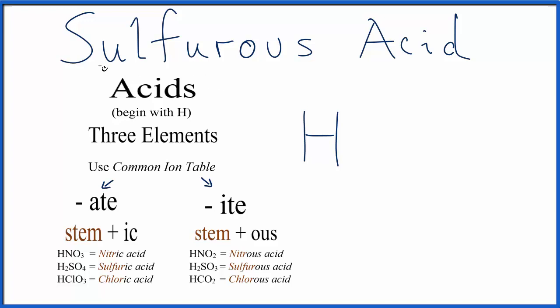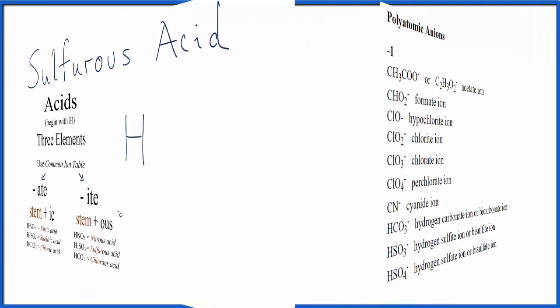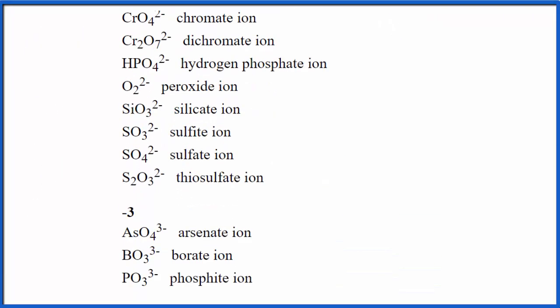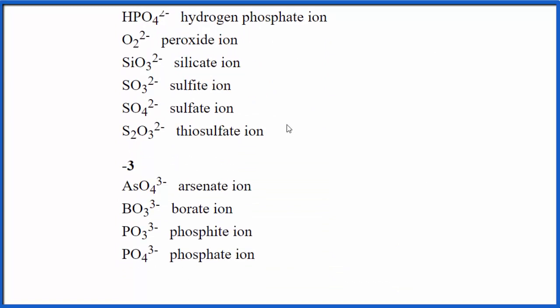When we look up here, we have sulfurous, and the one that matches that is this right here with the I-T-E. So we have sulfur and then the O-U-S. We'll go to the common ion table and look up something that ends in sulfite. So we'll scroll down our table, we're looking for a sulfite type thing, and there it is: SO3 2- is the sulfite ion.